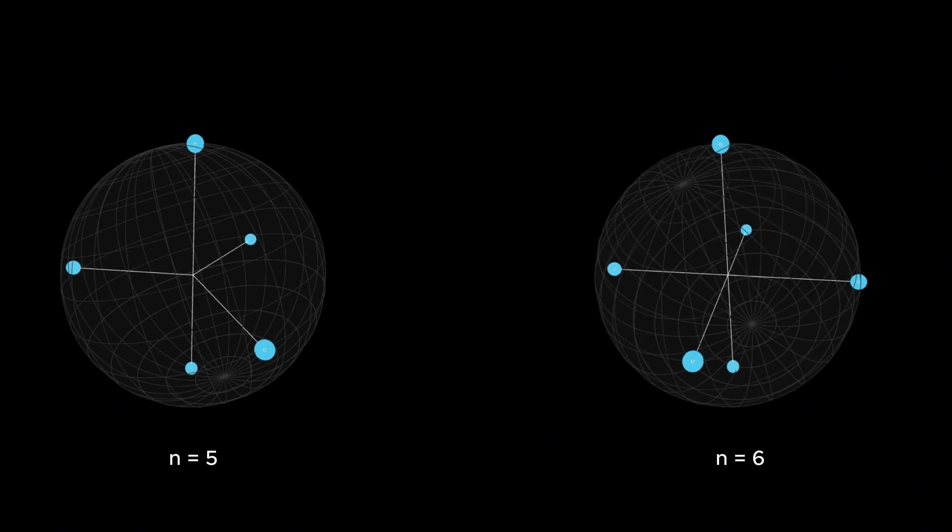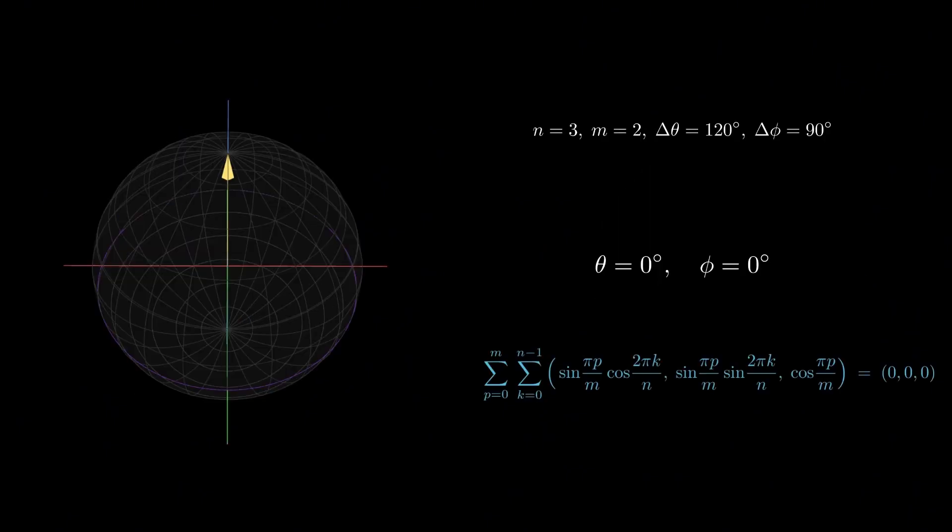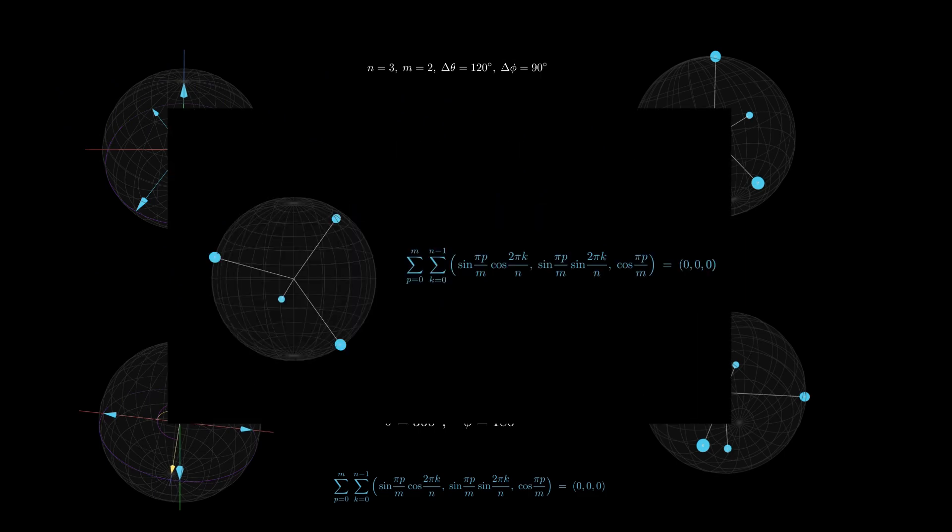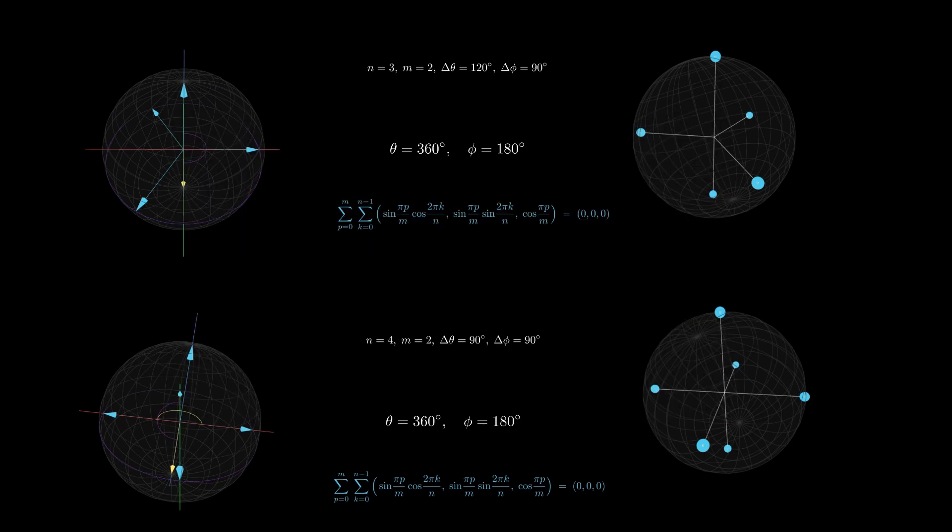However, we can make it work for five and six charges. For instance, five charges can be represented by setting m = 2 and n = 3: three charges in the equator, one at the top and one at the bottom. Six charges works with m = 2, n = 4: four charges in the equator, one at the top and one at the bottom. So it seems the double sum succeeds in some cases but definitely fails in others, like the tetrahedron.